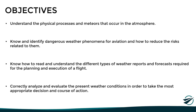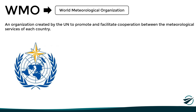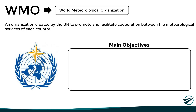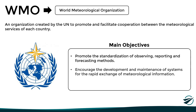Moving on to the institutions that regulate meteorology worldwide, we have the World Meteorological Organization, an entity created by the United Nations to promote and facilitate cooperation between the meteorological services of each country. The main objectives of the WMO are to promote the standardization of observing, reporting, and forecasting methods; encourage the development and maintenance of systems for the rapid exchange of meteorological information; and promote research and teaching of meteorology worldwide.